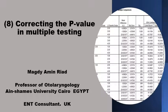As-salamu alaykum. When we are analyzing results of a study and we look at the differences between groups or relations between groups and find that the p-value is less than 0.05, we say that this relationship is significant because the probability of it happening by chance is less than 1 in 20.